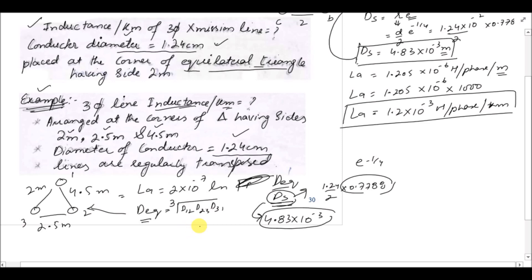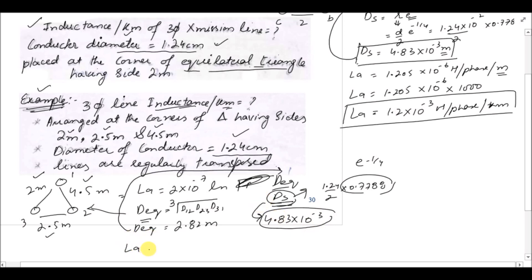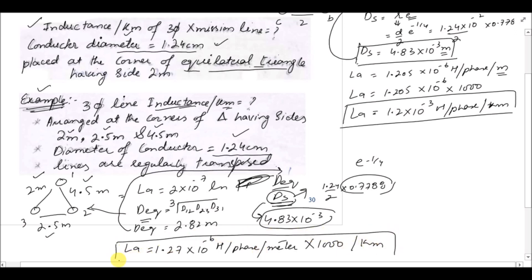We know D₁₂ = 2 m, D₂₃ = 2.5 m, and D₃₁ = 4.5 m. Substituting into the equation, D_eq = 2.82 meters. Plugging D_eq and Ds into the inductance formula gives L = 1.27 × 10⁻⁶ Henry per phase per meter. Multiplying by 1000 converts to per kilometer. This is the inductance value for a transposed line with unequally spaced phases.